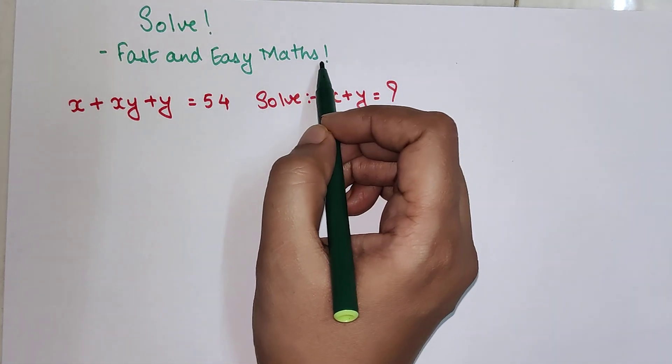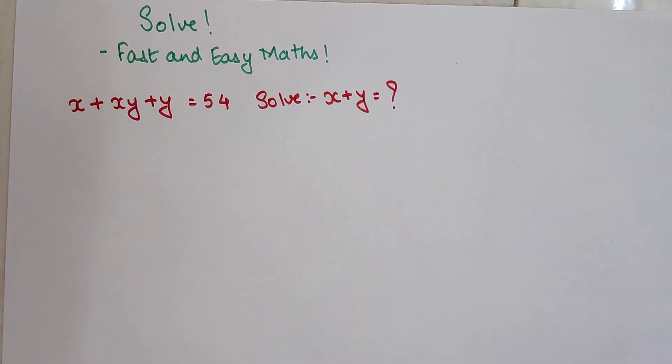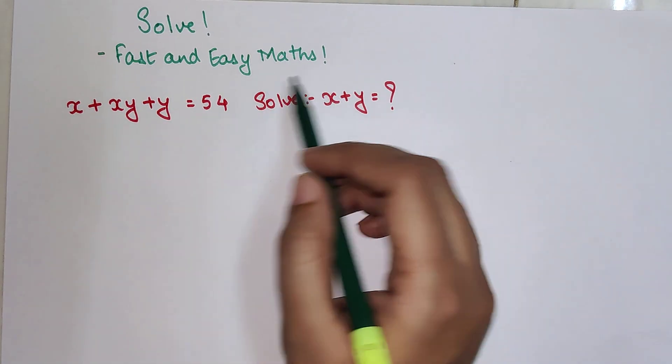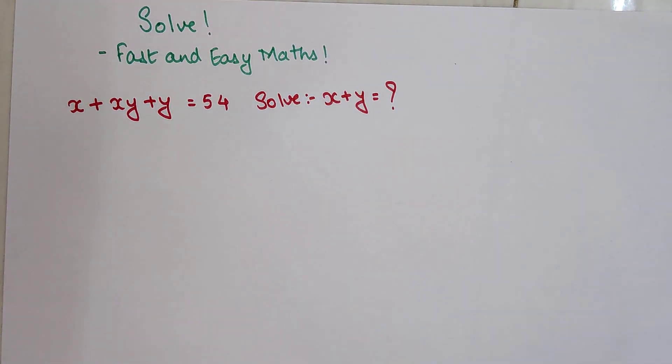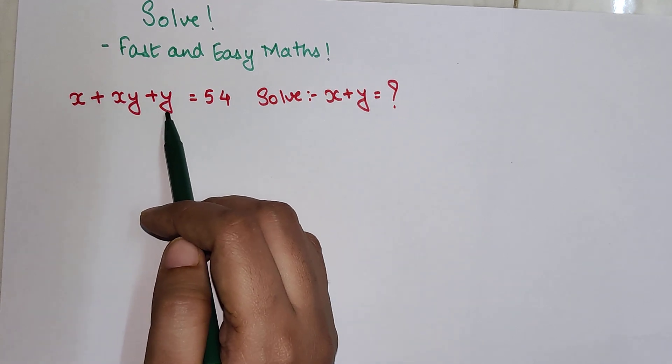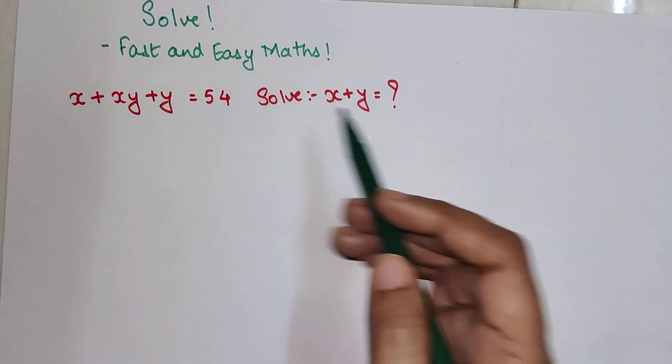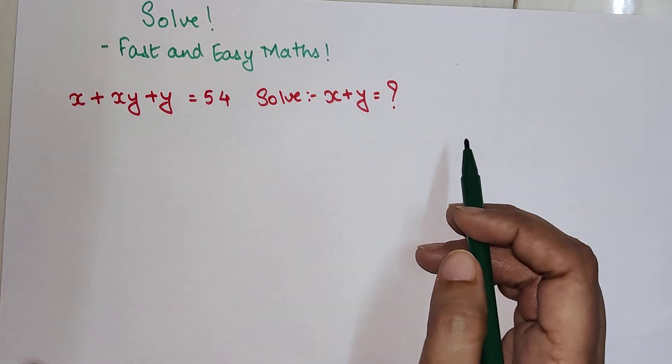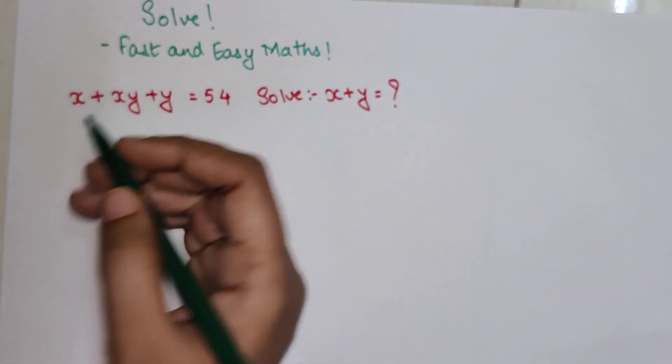Welcome everyone to my channel, Fast and Easy Maths, which is dedicated to give you tips and tricks related to mathematics. Today we are solving a question where it is given that x + xy + y = 54 and we have to find the value of x + y.